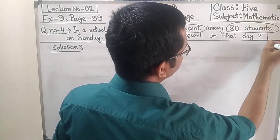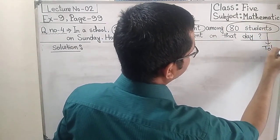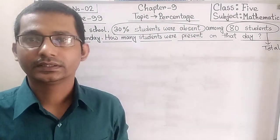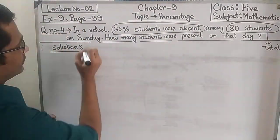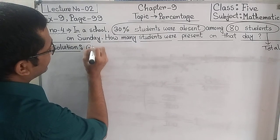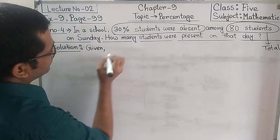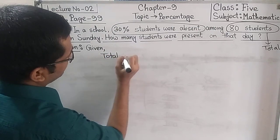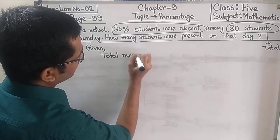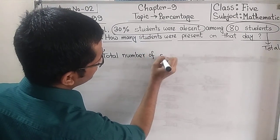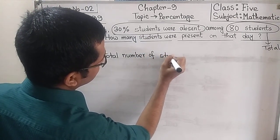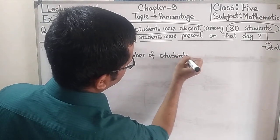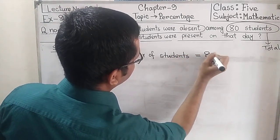So now we can write: Given, total number of students is equal to 80.